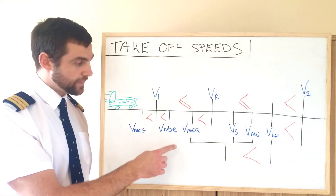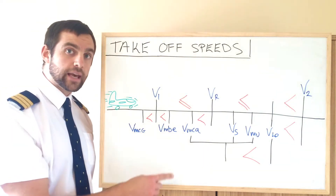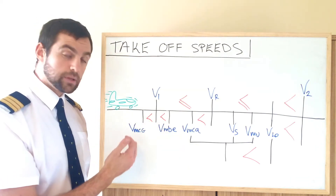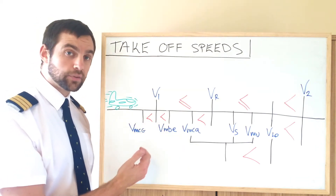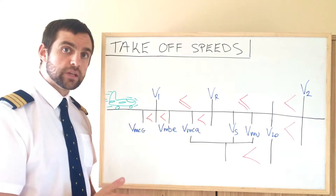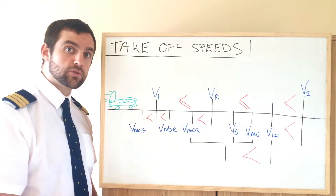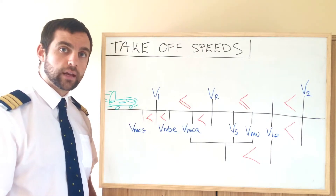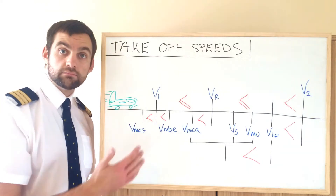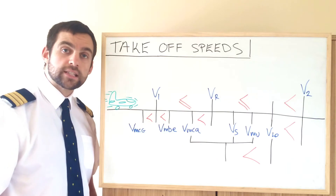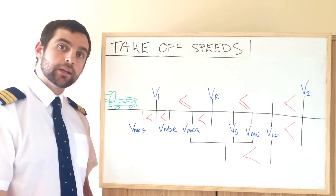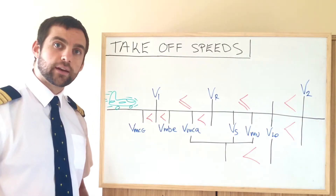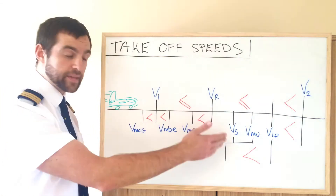Next on the line is VMCA — minimum control air. Similar to minimum control on the ground, it's the minimum speed which provides directional control in the air in the event of a critical engine failure. VR is rotate — it's the speed at which the pilot initiates the rotation of the aircraft, starts pulling the nose up.